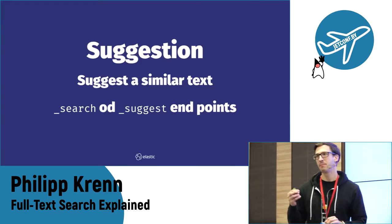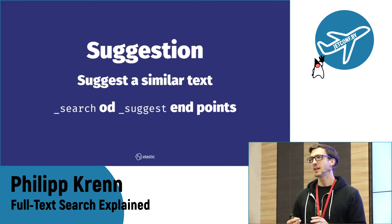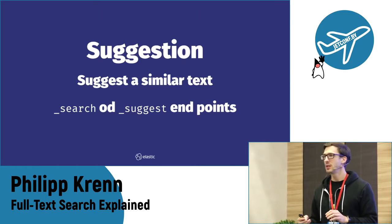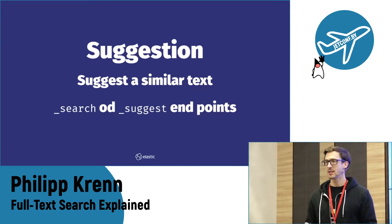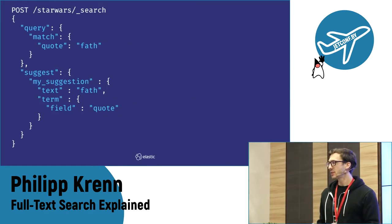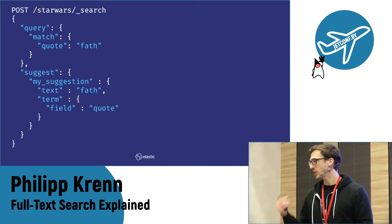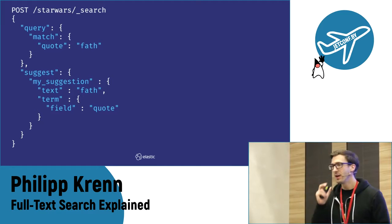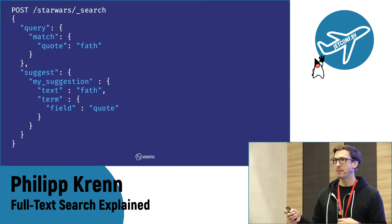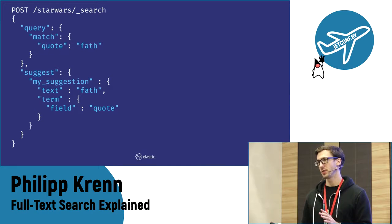You can add suggestions. If you search for something and nothing is returned, it can suggest similar stuff to you. For example, if you search for 'fav' and don't find anything, you can ask Elasticsearch to suggest something similar to 'fav' and it will find something. But you will need to have that changed in your mapping so the information is extracted and partial matches are available.